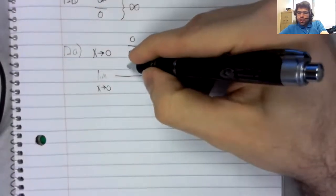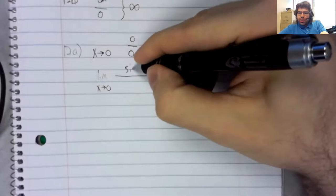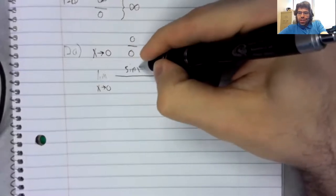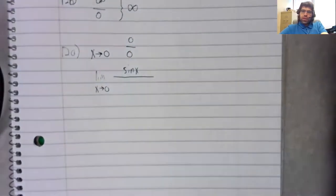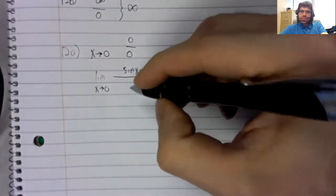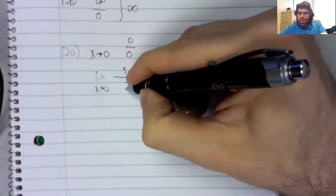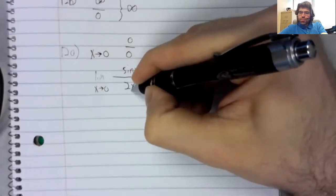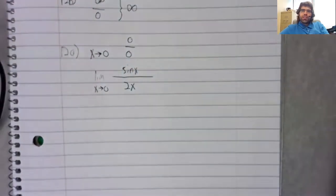Well, the derivative of the cosine is the negative sine, but there's also a negative in front of it. So that's the positive sine. The derivative of x squared is 2x.